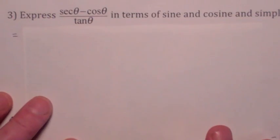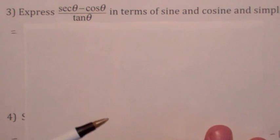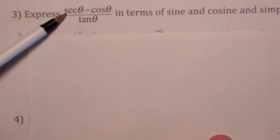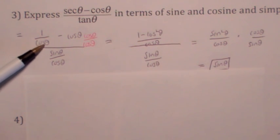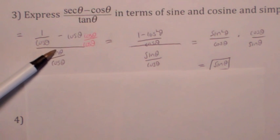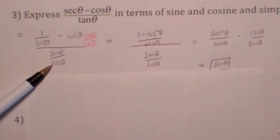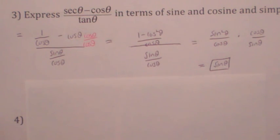Much of what we're going to do this section is prove that equations are identities. Here's a practice problem: express in terms of sine and cosine and simplify. Replace secant with 1 over cosine, get a common denominator in the numerator, and you get 1 minus cosine squared over cosine. The bottom becomes sine over cosine. Flip that over and cancel, and the answer reduces to sine theta.